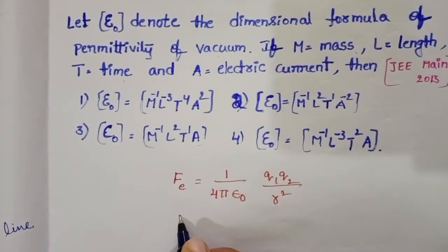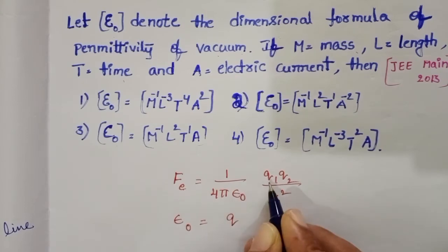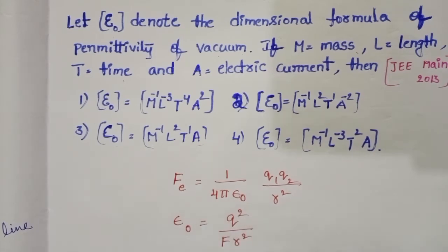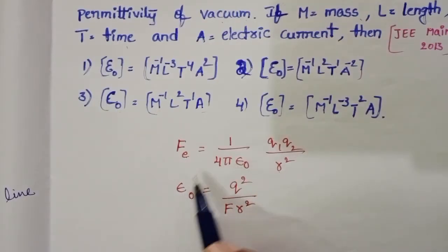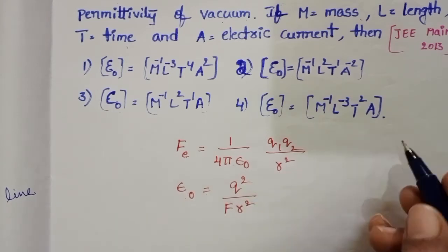From this formula, ε₀ equals Q²/(F×R²). 4π is constant, no need to take here. So ε₀ = Q²/(F×R²).